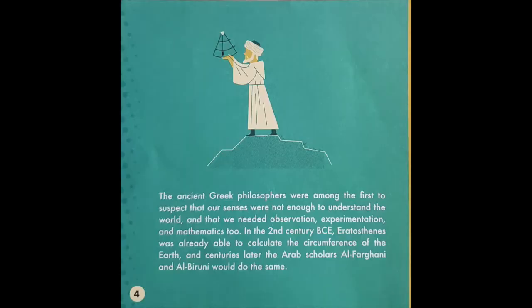The ancient Greek philosophers were among the first to suggest that our senses were not enough to understand the world, and that we needed observation, experimentation, and mathematics too. In the second century BCE, Eratosthenes was already able to calculate the circumference of the earth, and centuries later Arab scholars Al-Fargani and Al-Biruni would do the same.